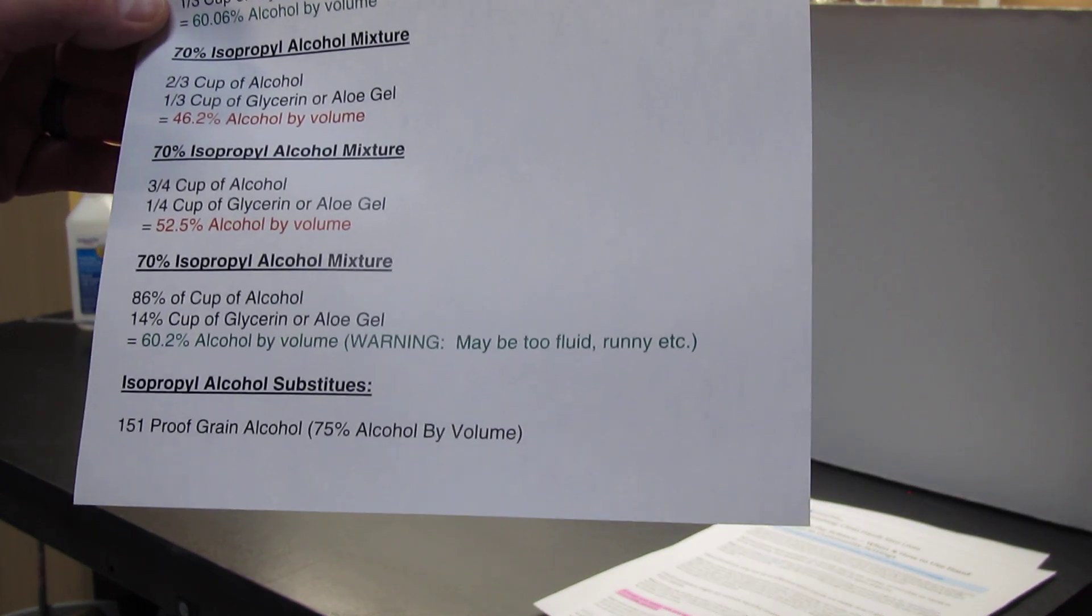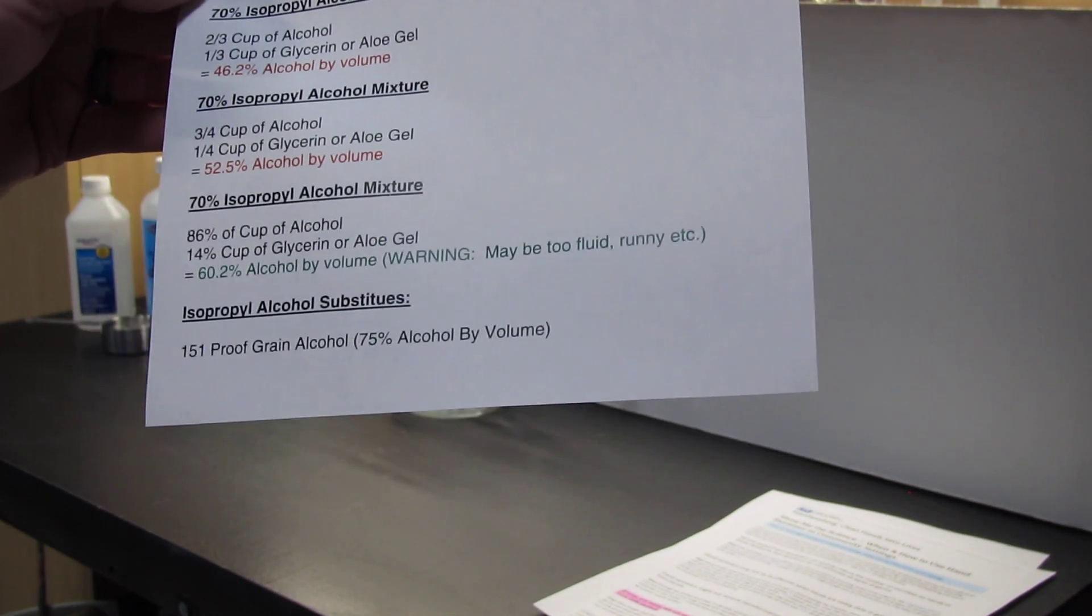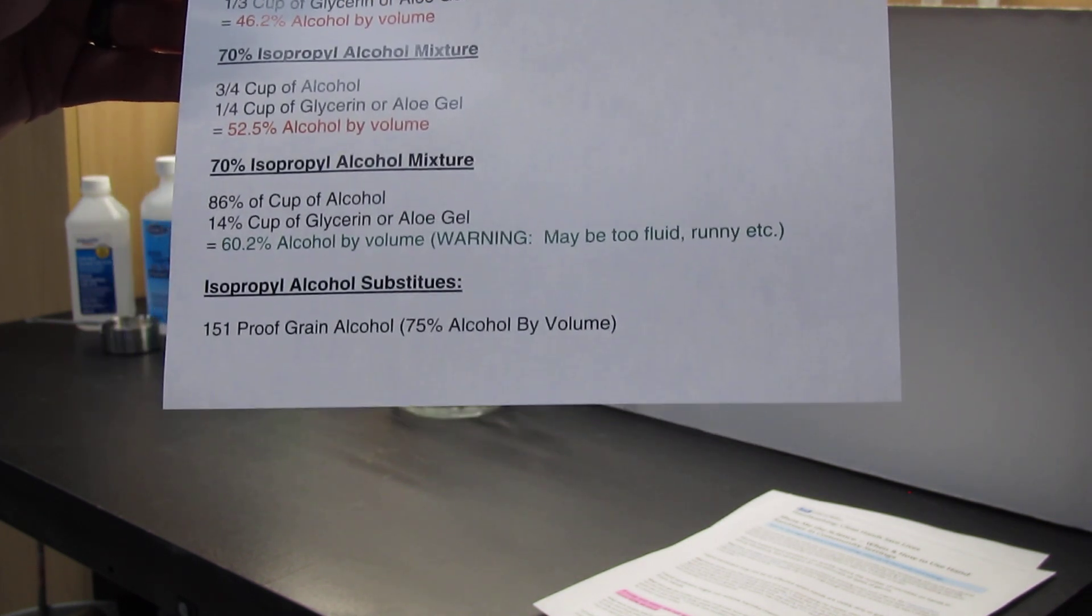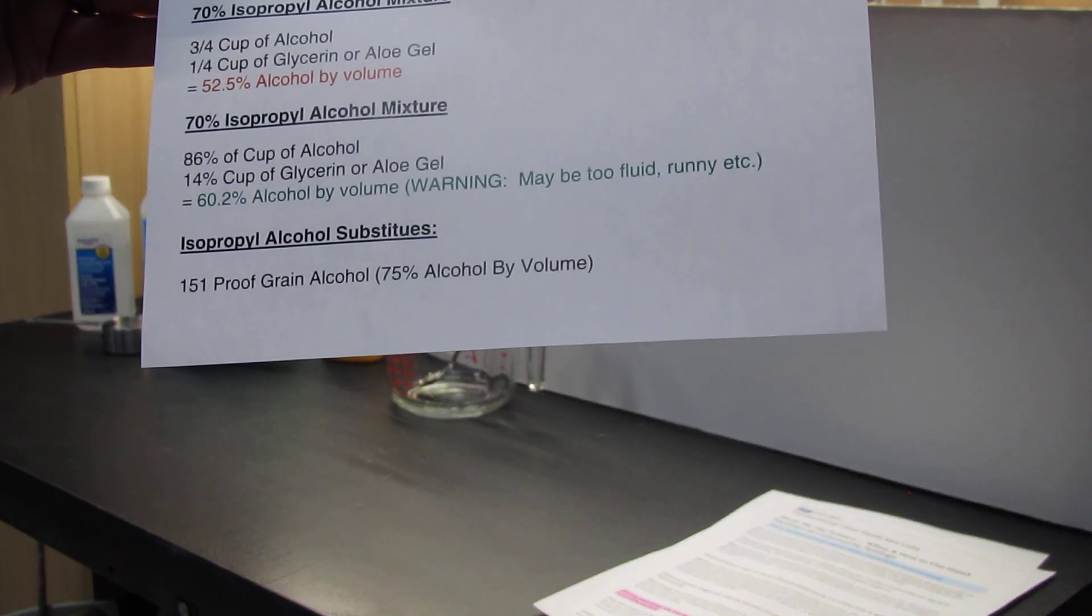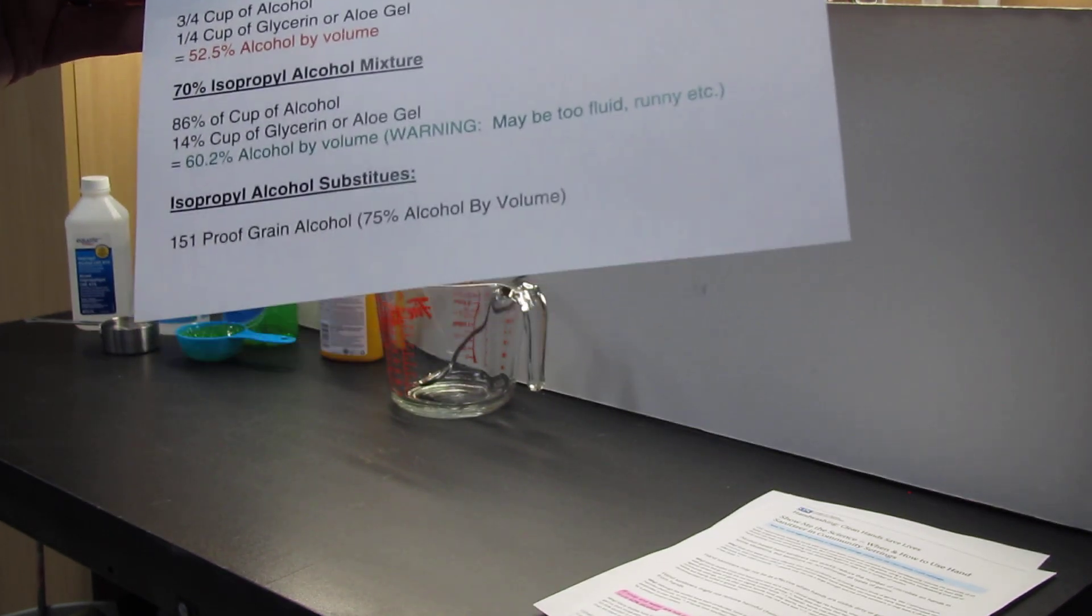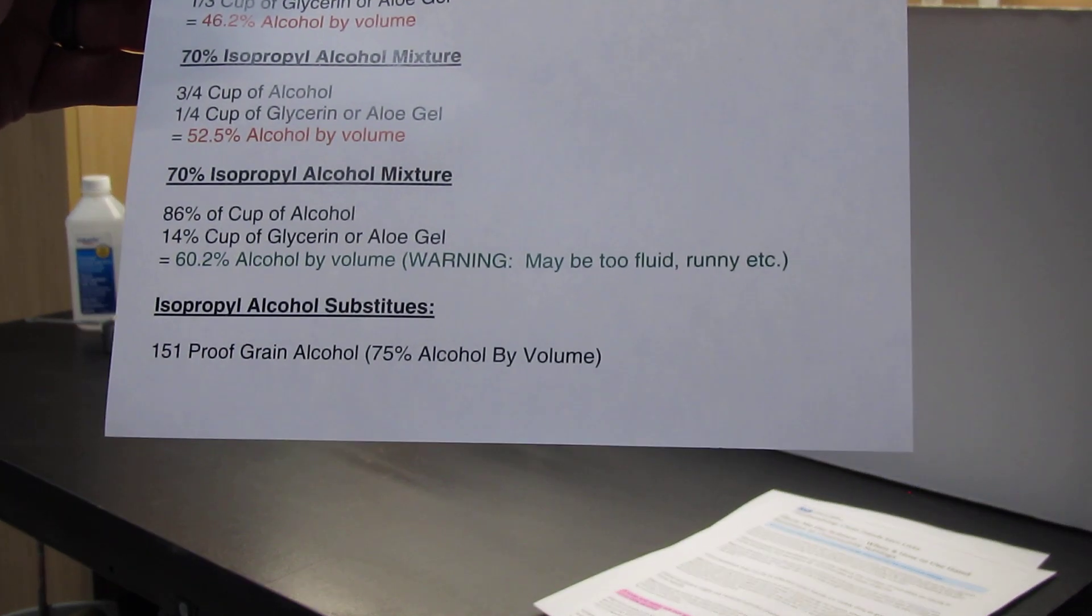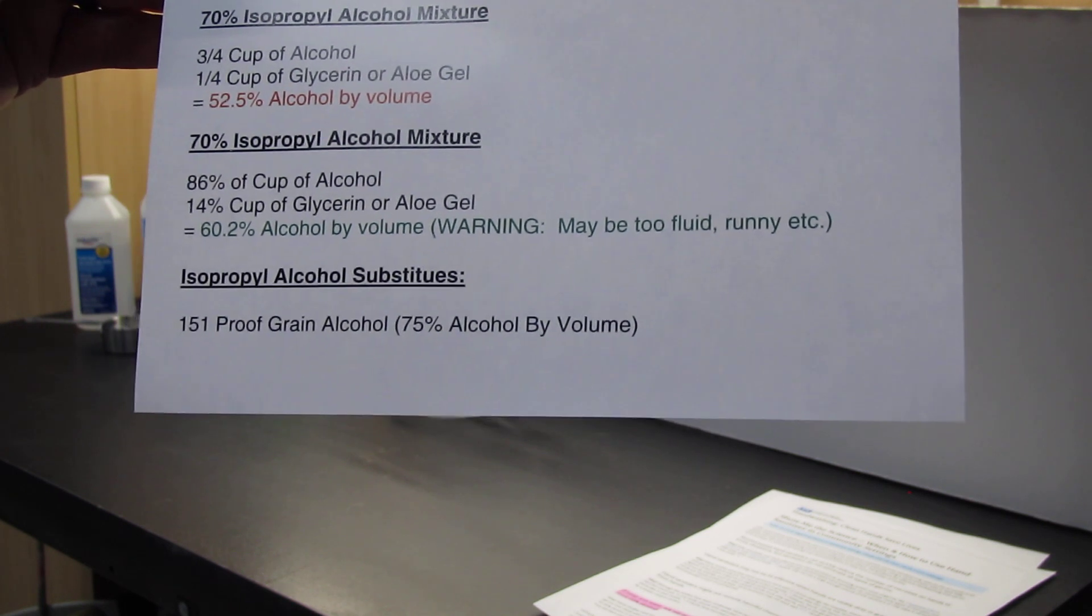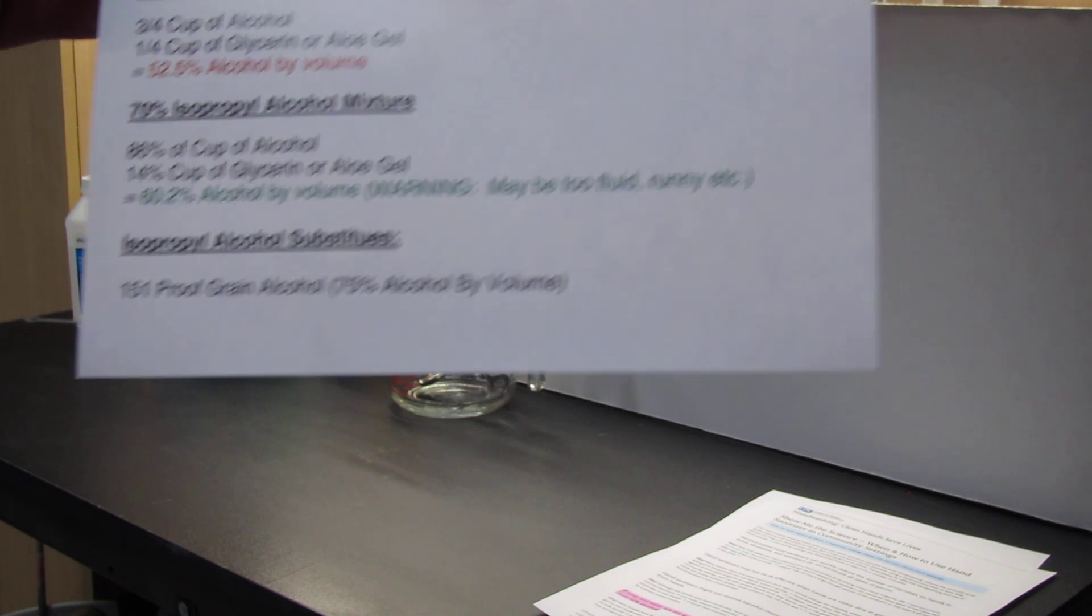Then you can see even if we did three-quarters of a cup of that 70% isopropyl alcohol, you're only going to get up to 52%. So to make that 70% isopropyl alcohol work, you need to use 86% of your mixture to have the right amount at 60% at the end.